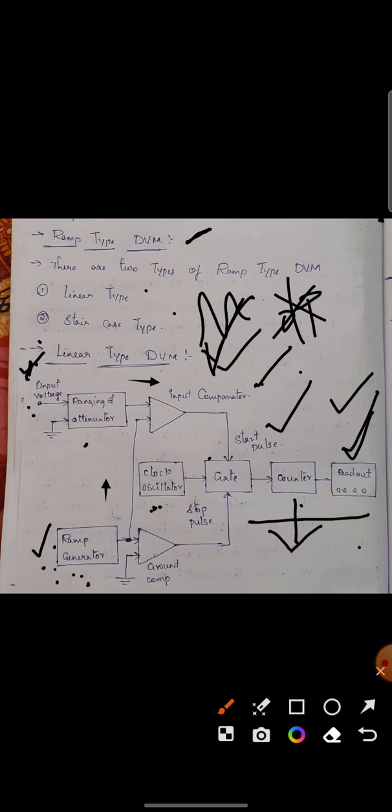Now the ground comparator remains left. The ground comparator gets the ramp signal. Here we compare two signals and it will produce an output. This output will feed to the gate and the gate will get closed. This is the process of linear type digital voltmeter.